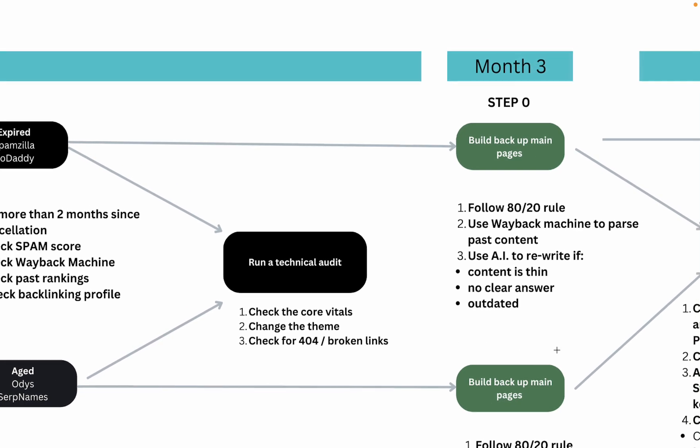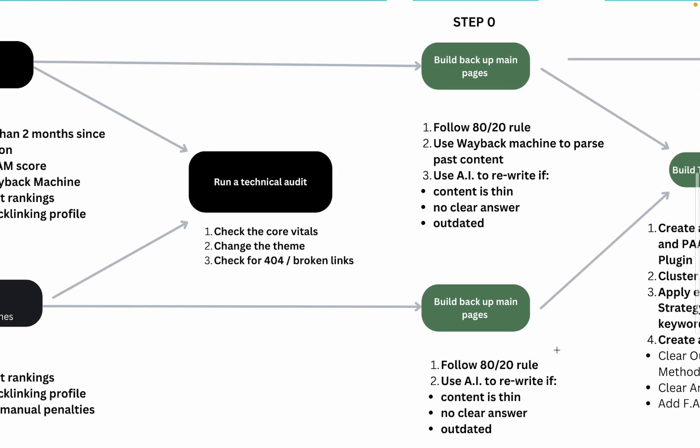When month three arrives, there's a step zero that applies to both expired and aged domains: follow the 80/20 rule — decide which 20% of the content generates 80% of the traffic. For an expired domain, I sometimes use the Wayback Machine to parse the best content. It's a bit of a morally gray area because you don't own that content, but if a person let go of the domain they likely don't care about the content either. It can be a quick fix if you're running out of money.